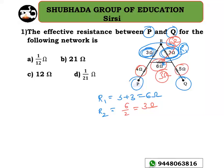Now this becomes 3 ohm. So 3 ohm, 4 ohm, and 5 ohm are connected in series. The equivalent resistance is 3 + 4 + 5 = 12 ohm, which is option C. This is how you solve problems on various resistor configurations.